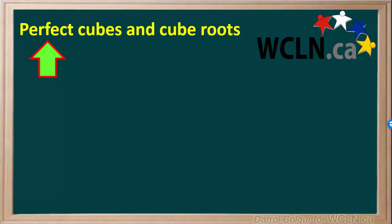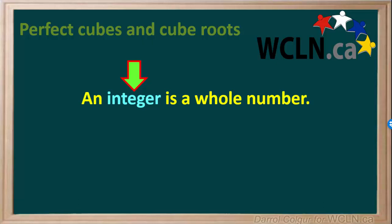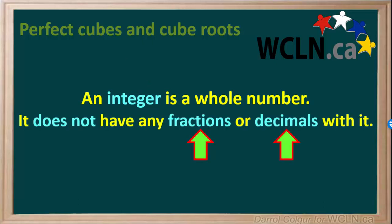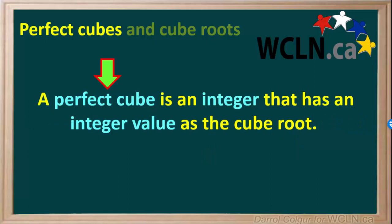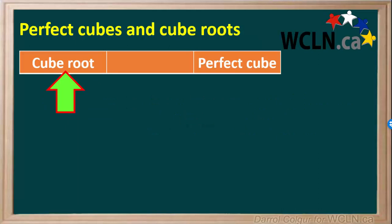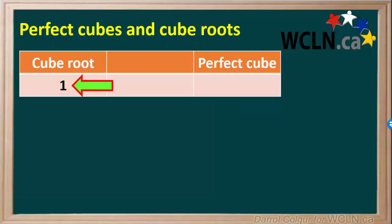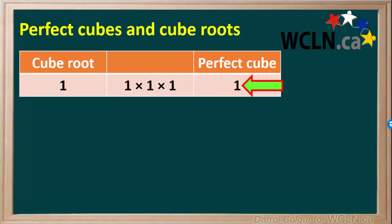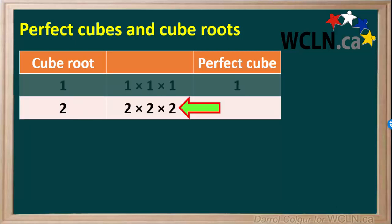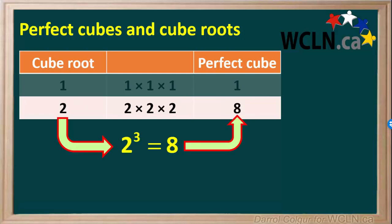It will help us to know a few perfect cubes. First, let's find out what we mean by a perfect cube. An integer is a whole number — it does not have any fractions or decimals. A perfect cube is defined as an integer that has an integer value as its cube root, so there are no fractions or decimals in either the cube or the cube root. We'll make a table with cube roots in one column and their perfect cubes in another. Starting with integer 1: 1 cubed equals 1 times 1 times 1, which is 1. The next integer cube root is 2: 2 cubed is 2 times 2 times 2, which is 8.